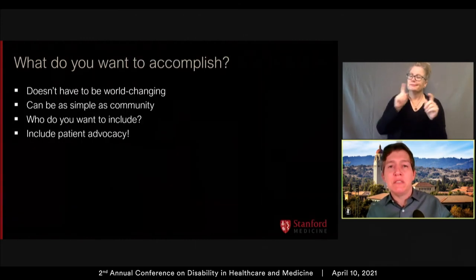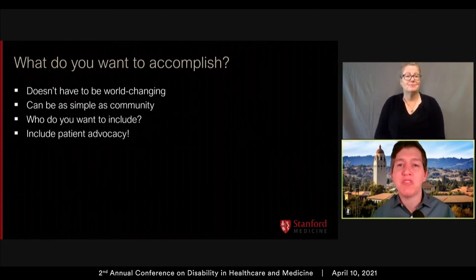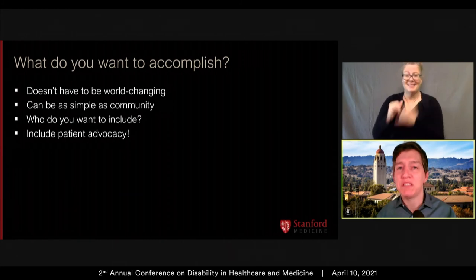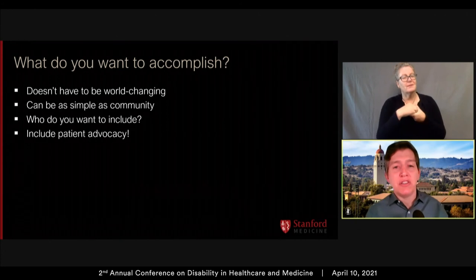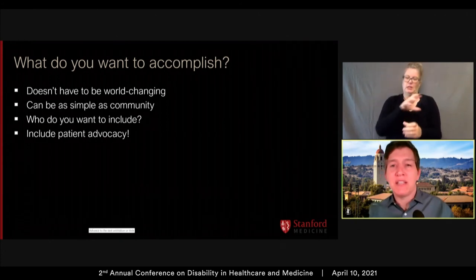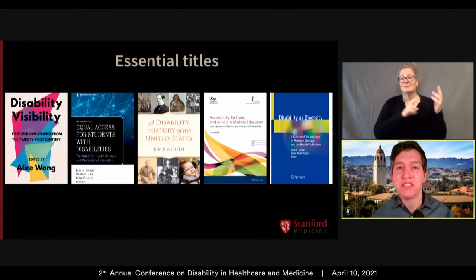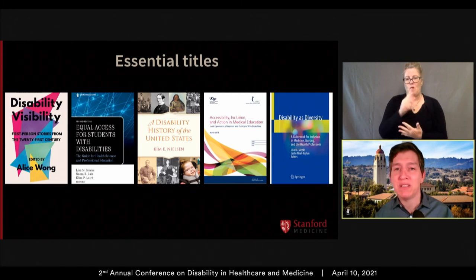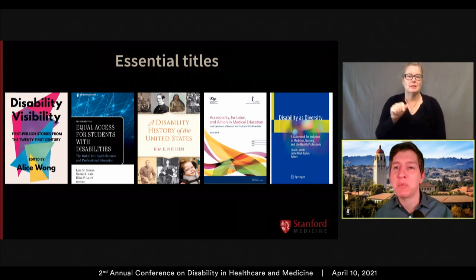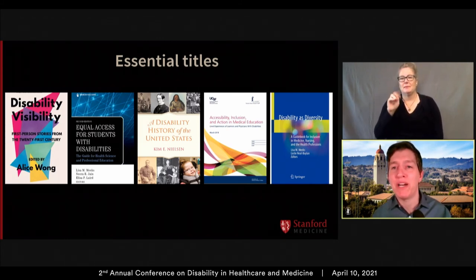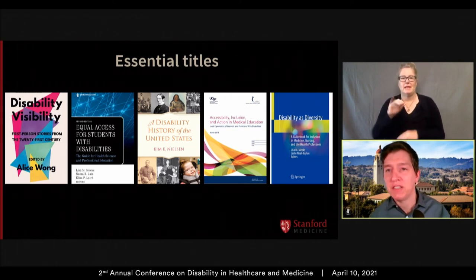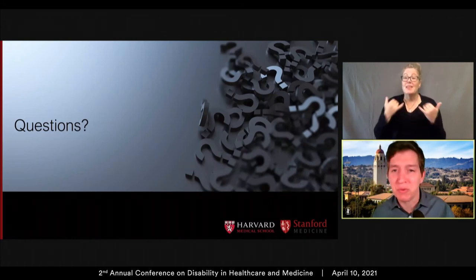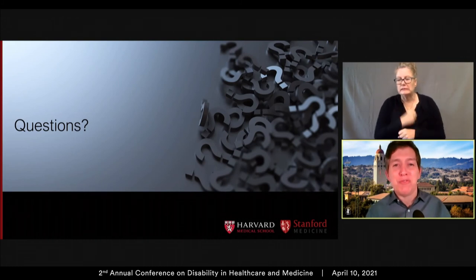Just ask yourself what you want to accomplish. It doesn't have to be world-changing; it can be as simple as creating a community. Think intentionally about who you want to include and be as inclusive as possible, and definitely include patient advocacy in your efforts. Essential reading recommendations include: Disability Visibility by Alice Wong; Equal Access for Students with Disabilities by Lisa Meeks, Meera Jane, and Elisa Laird; A Disability History of the United States by Kim Nielsen; the famous AAMC report by Meeks and Jane; and Disability as Diversity. With that, we're going to wrap up and take some questions from the audience.